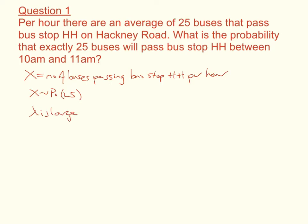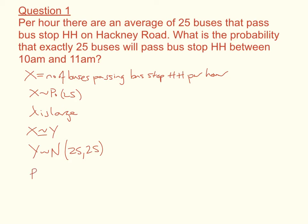In order to do this approximation, we say that x is approximately the same as y, where y has a normal distribution of mean 25 and variance 25. So a random variable with a Poisson distribution of 25 is approximately the same as a random variable which has a normal distribution of mean 25 and variance 25. Now we need to work out the probabilities — we're finding the probability that exactly 25 buses pass bus stop HH, that is P(x = 25).